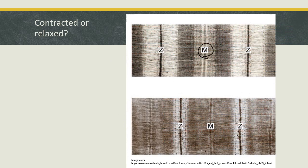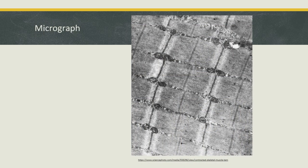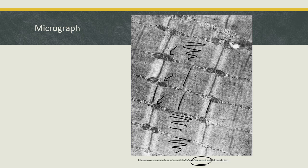Looking at another pair of images with M line and Z discs labeled: one is definitely relaxed because the M line region is big and pale. The other has so much actin and myosin overlapping it's quite a bit darker — that one is contracted. In a single electron microscopy image, we can see the M line and Z discs with things tight in toward the M line — this is definitely contracted. All those little dots are glycogen crystals and little blobs are mitochondria floating around in the muscle tissue.